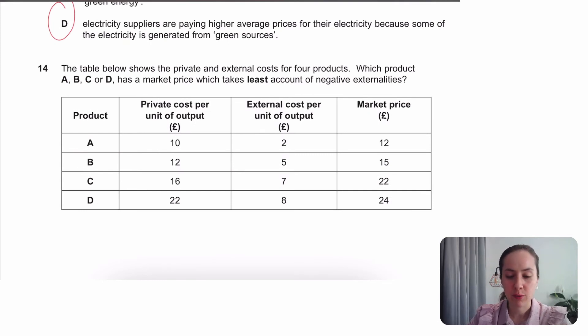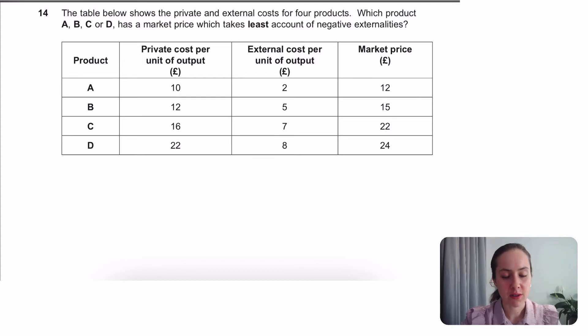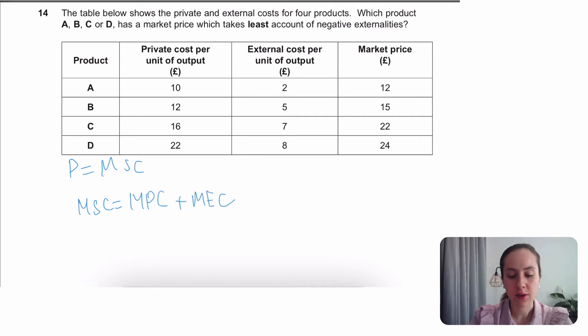Which product has a market price which takes least account of externalities? This is a really tough one. They do this sometimes. Sometimes it's in a table. Not a graph as maybe as you'd expect. So ideally you would price a good, the market was working super well, equal to the marginal social costs. And to work out marginal social costs, which we don't have here, is you need to work out your marginal private costs plus your marginal external costs. Which we have this one here. We have this one there. So to work out MSC, I should add these up together and get the total cost that society has paid to produce each of these products. So 12 for this one, 17 for this one, 23 and 30. And again, ideally the price would always equal the full cost to society. That way everything's been taken into account.